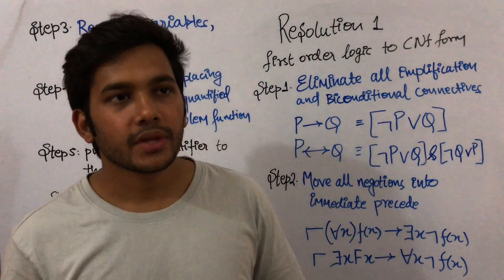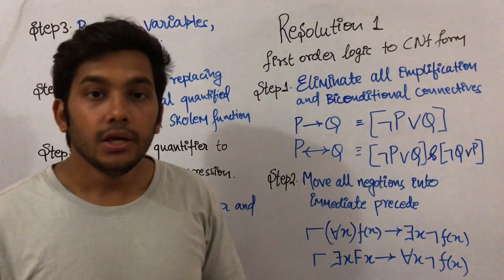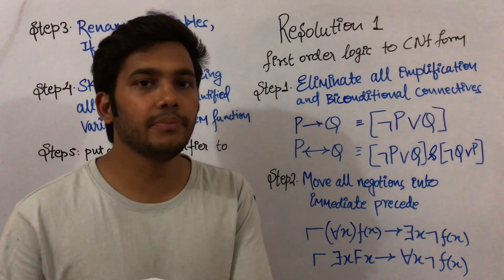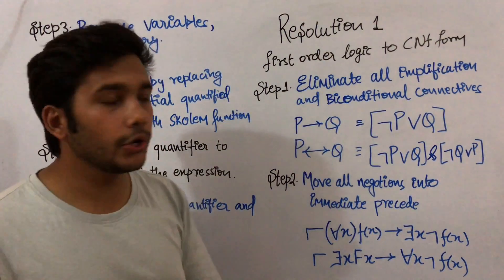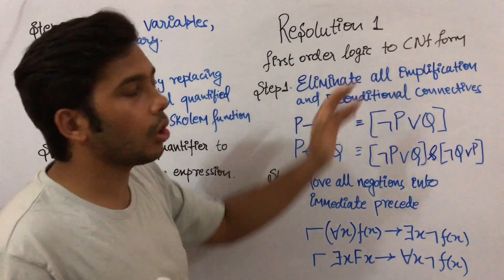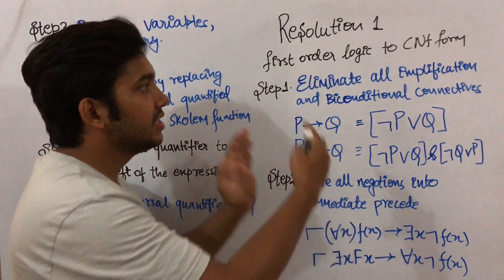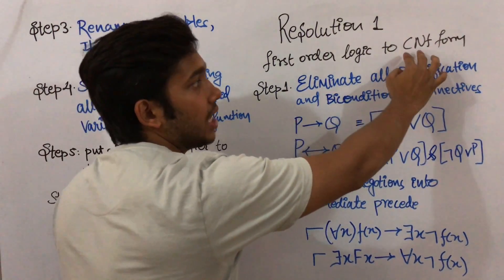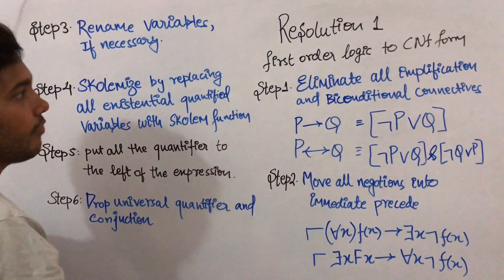In this video I am going to talk about resolution. Basically, when there are given sets of statements and from those statements we need to derive some result, resolution is used. Before going to resolution, first-order logic statements need to be converted into CNF form — also called conjunctive normal form. The clauses that are given need to be converted into CNF form.